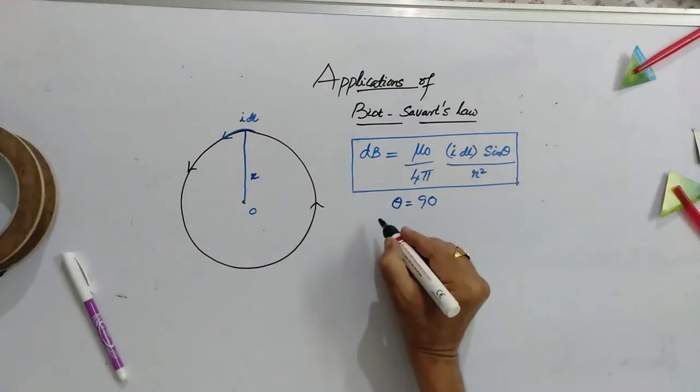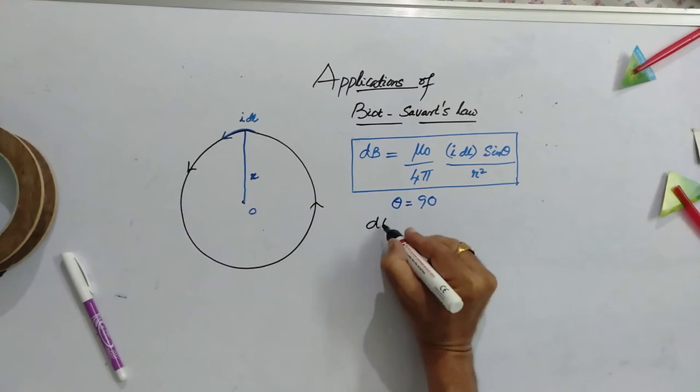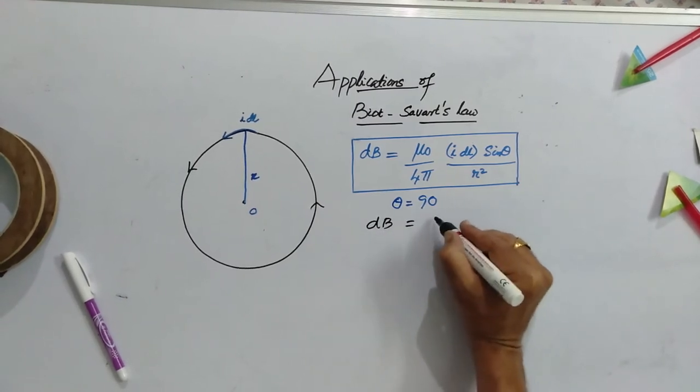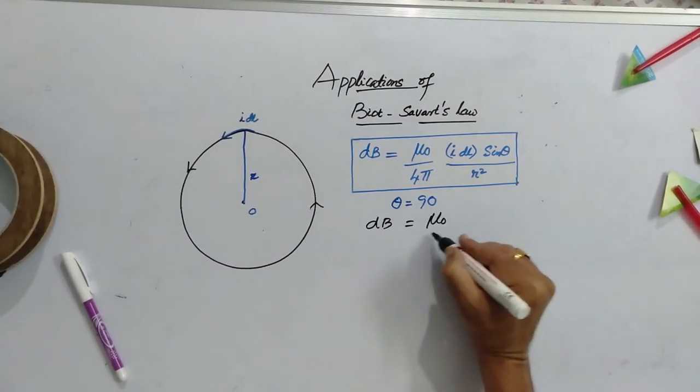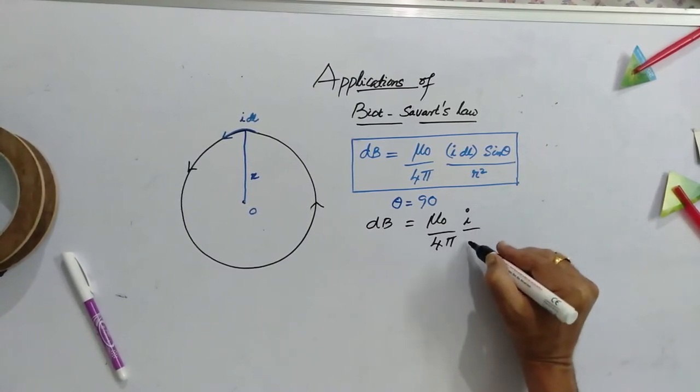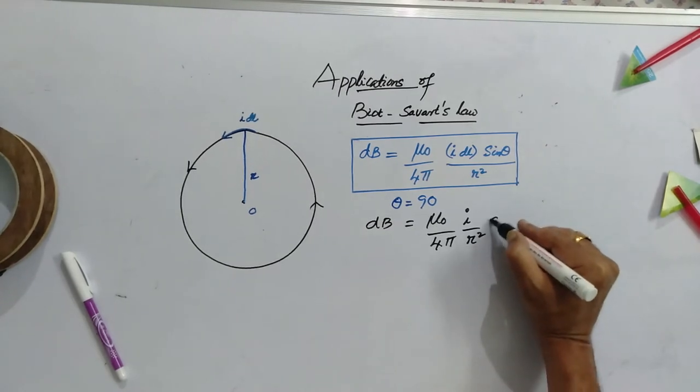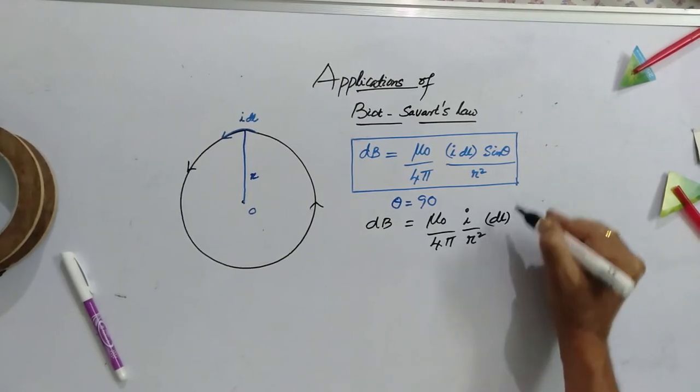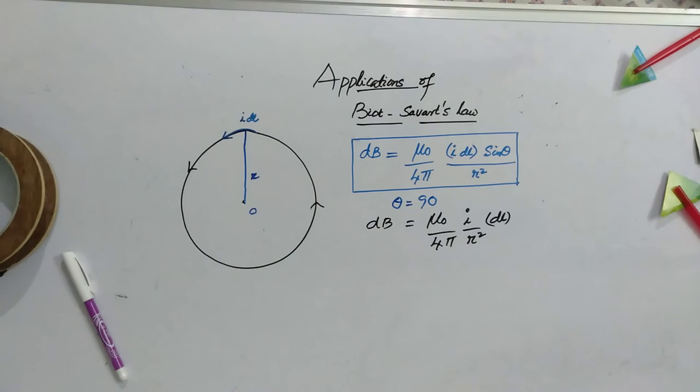If you substitute there, Db is equal to mu 0 by 4 pi i by r square DL and sin 90, that sin 90 is 1.